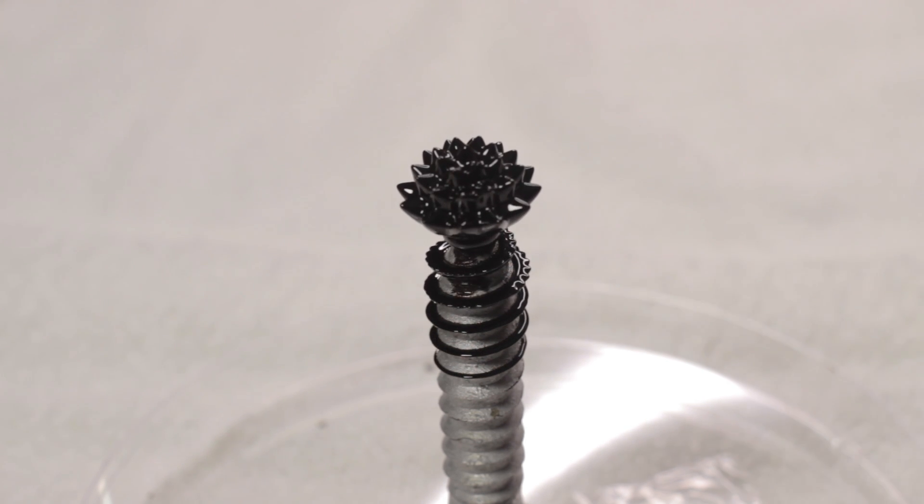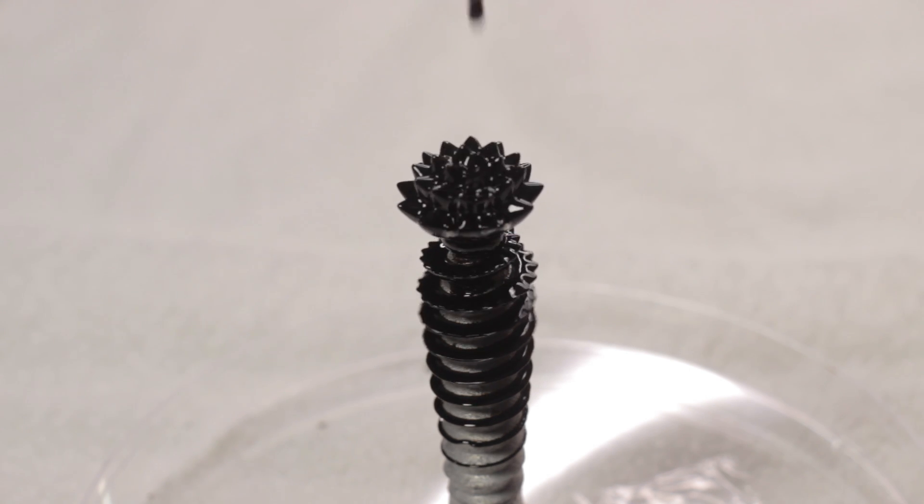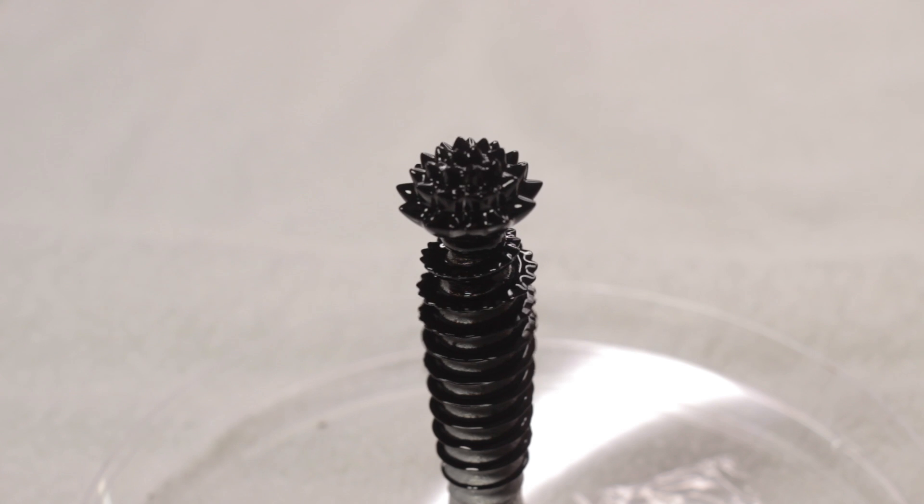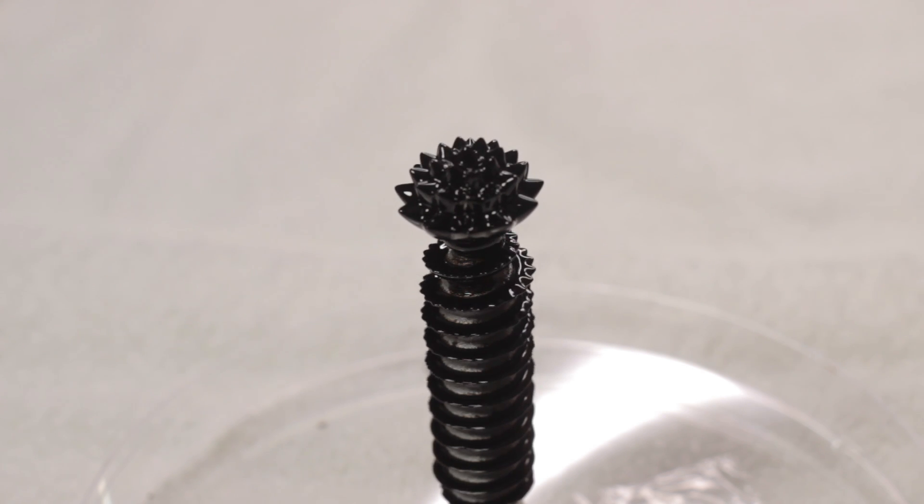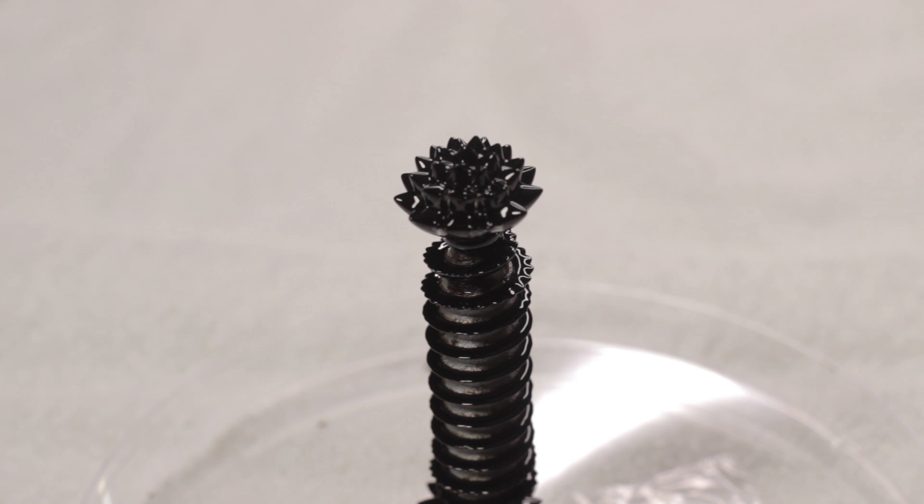Ferrofluid was invented in 1963 by NASA's Steve Papel as a liquid rocket fuel. It was originally intended to be drawn toward a pump inlet in outer space, using magnets to be drawn to the surface without clotting.